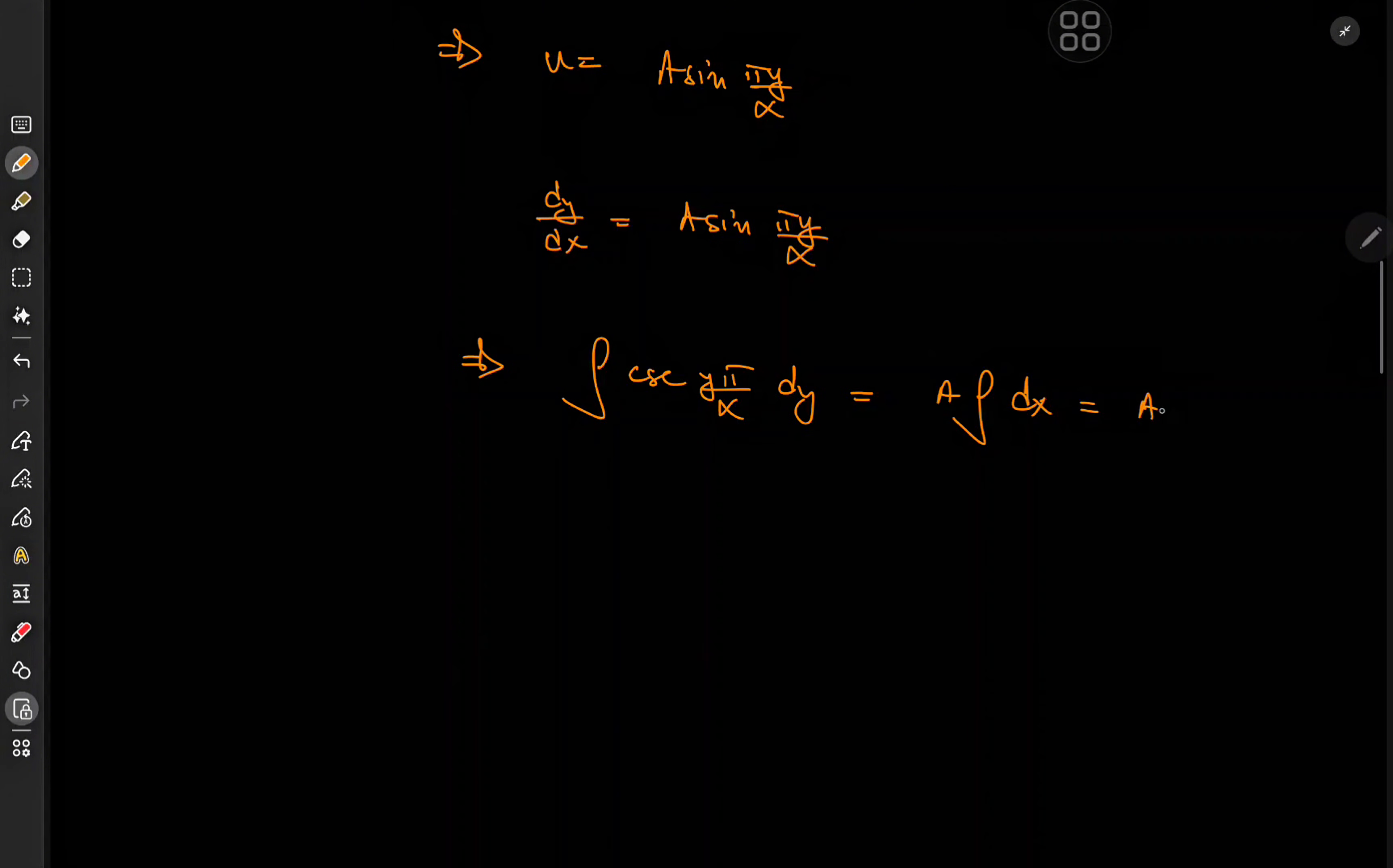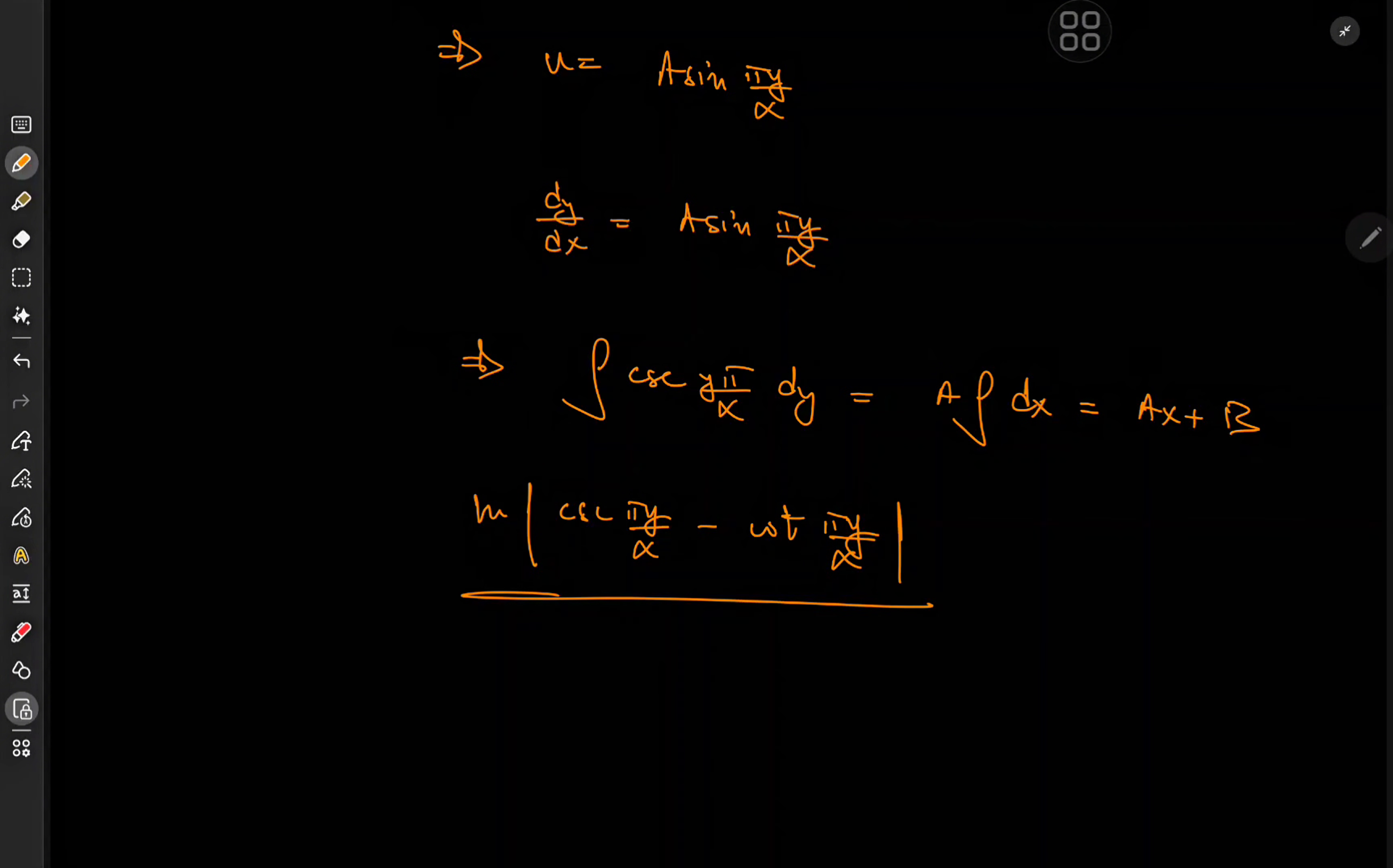So on the right we just have this linear function ax plus b, which looks dope. And on the left we have this interesting-looking trigonometric integral, which is just a cosecant function. So cosecant sorts out to log of cosecant minus cotangent. So that's cosecant of pi y over alpha minus cotangent of pi y over alpha. And we need to divide by the derivative of the argument, which is pi over alpha. Okay cool.